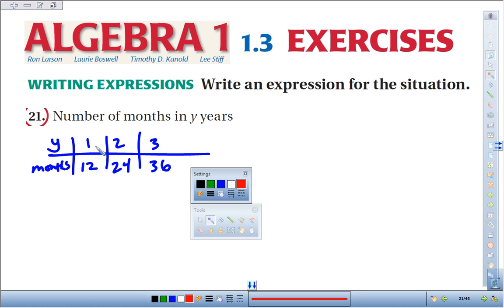In each case, you look for how do I go from 1 to 12, 2 to 24, 3 to 36? In each case, we've multiplied the number of years by 12, because there's 12 months in a year.